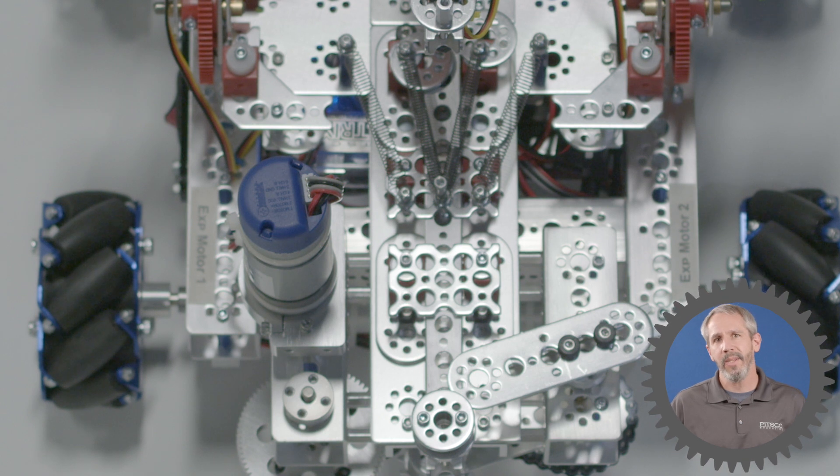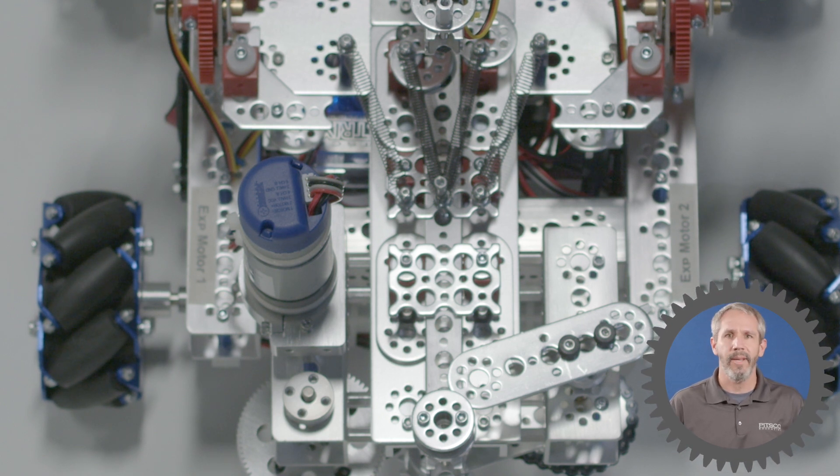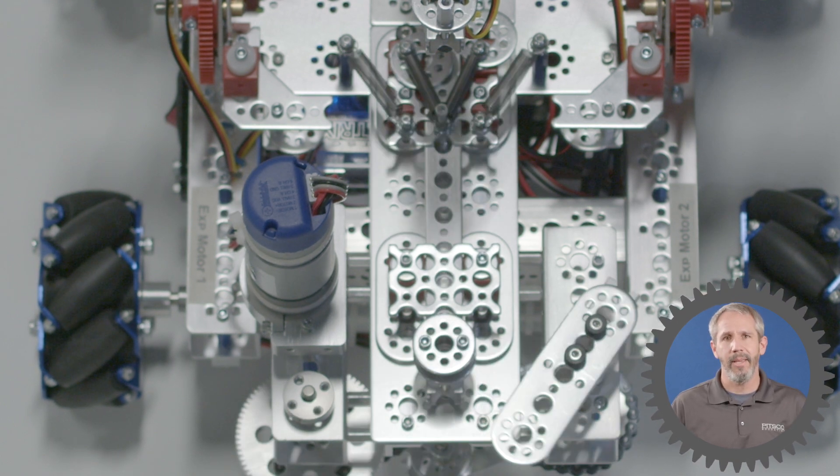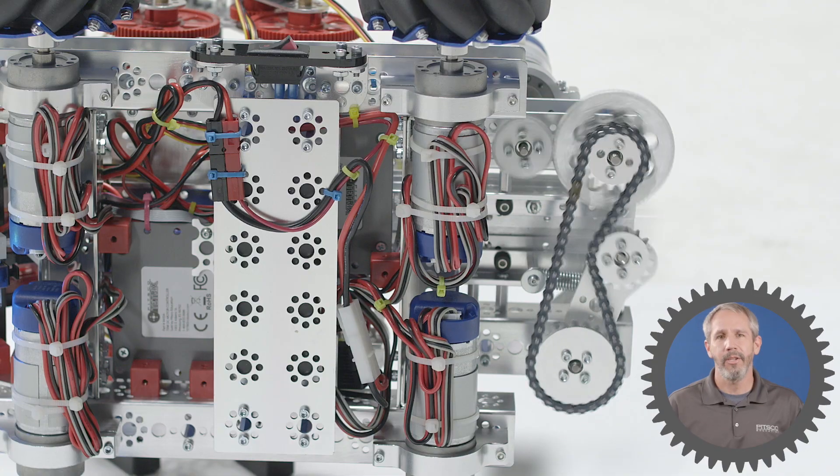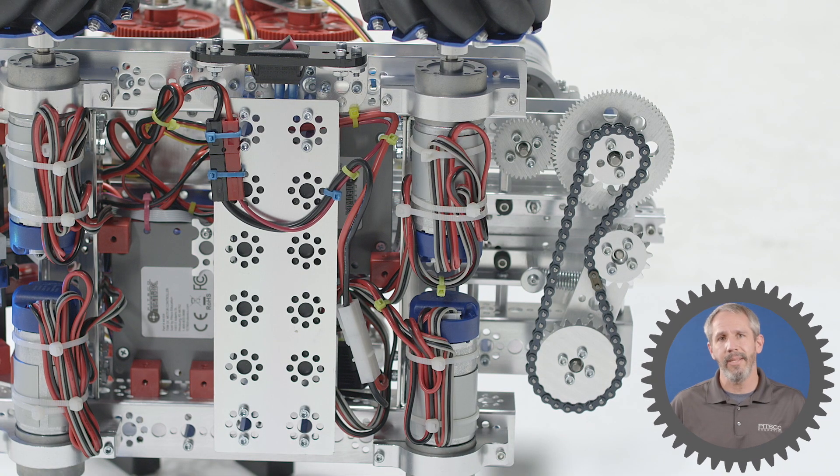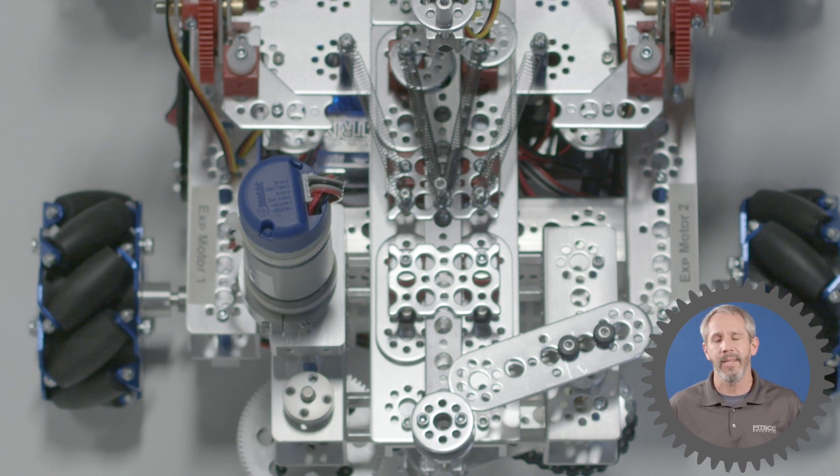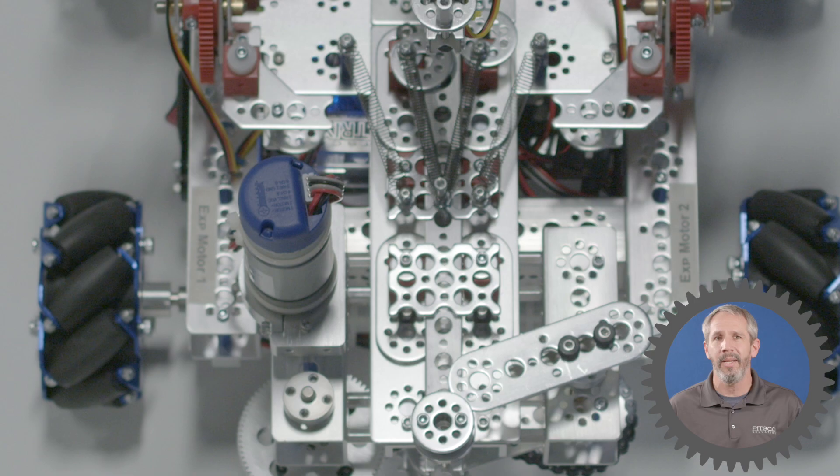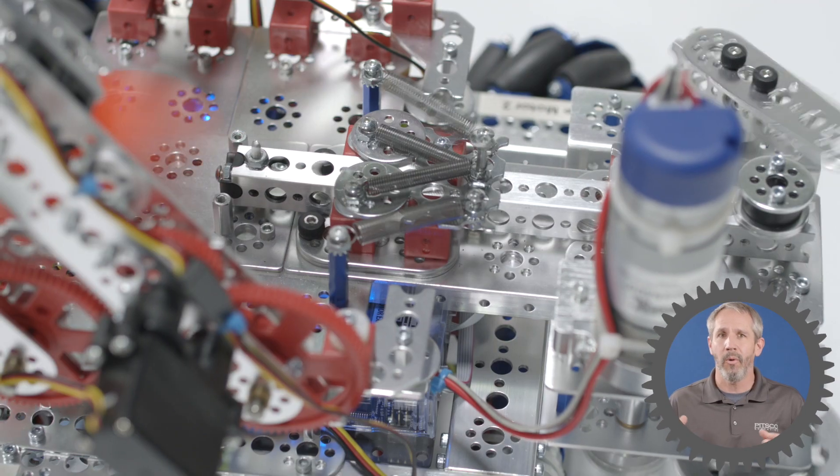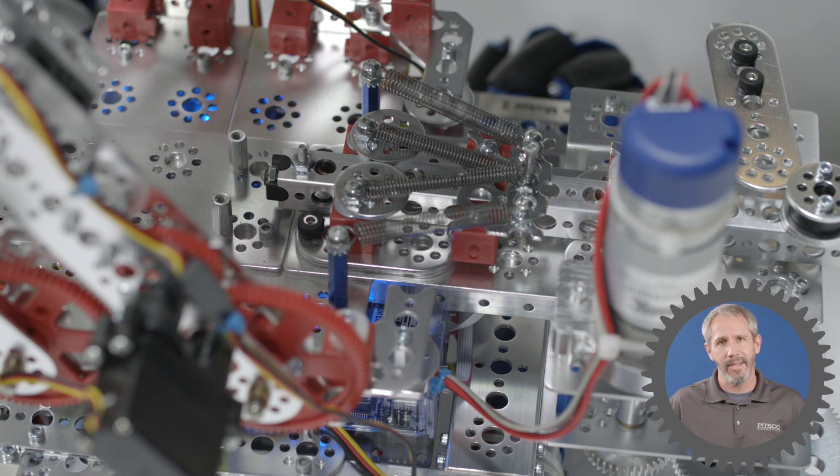The way that it works is we've got a Torquenado here, a single Torquenado that drives a gear train that cocks the striker. This gear train is geared backwards from the one that we saw on the other robot because here our engineering trade-off is that we're sacrificing rotational speed for the sake of more torque, and that allows us to cock that striker back.